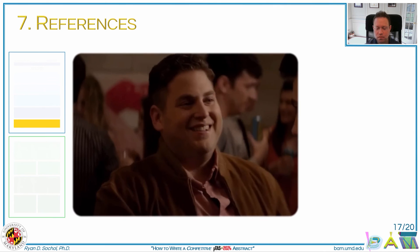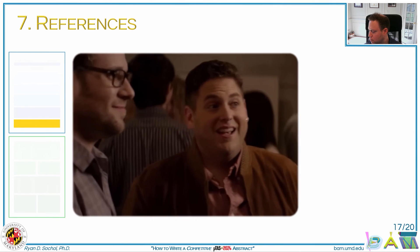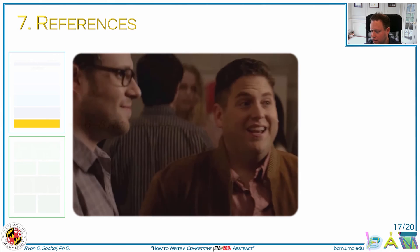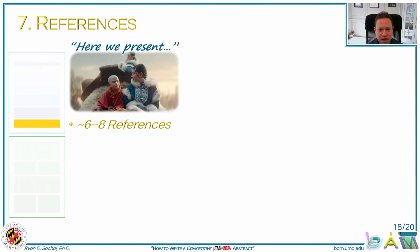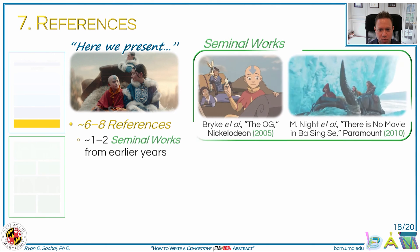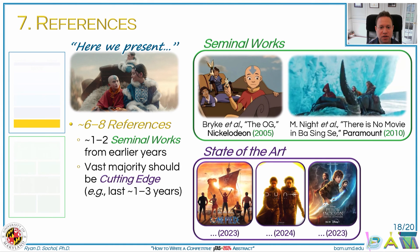Next, we have the references. We typically try to include just six to eight references with a couple of general rules. If you're presenting brand new content, it's important to highlight seminal works in the field, but as a general rule of thumb, most references should be fairly recent to really highlight what the true state of the field is at present.